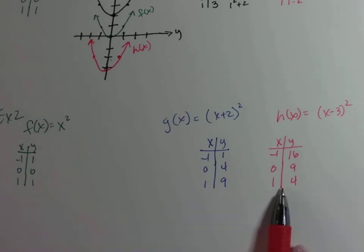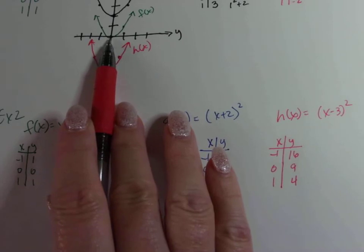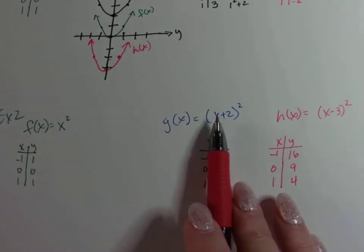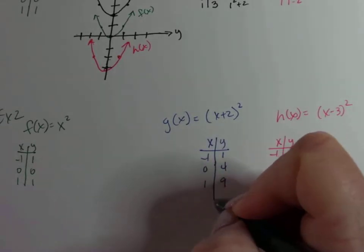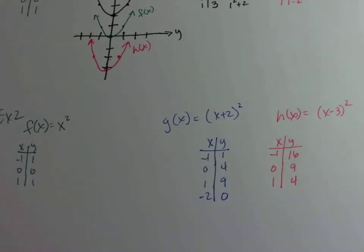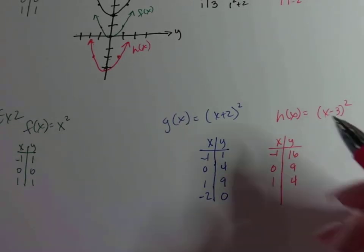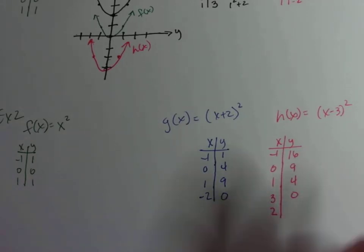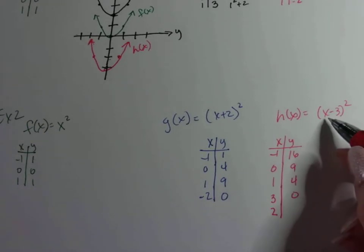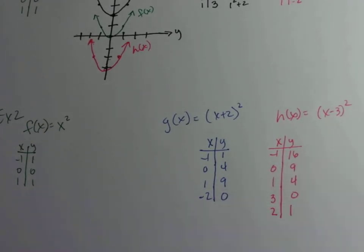To find where y equals zero, making graphing easier: for g(x), plugging in negative two gives negative two plus two equals zero, so zero squared is zero. For h(x), plugging in three gives three minus three equals zero. I'll also plug in two for h(x): two minus three is negative one, negative one squared is one. Now let's draw the graphs.